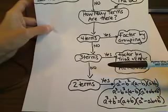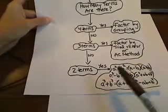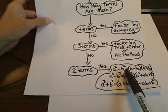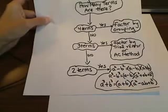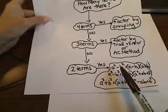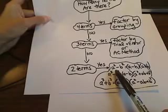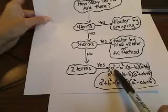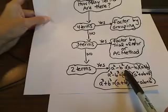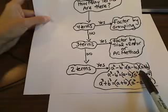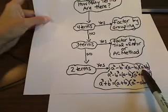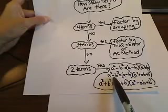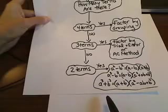And then if it's not three terms, then you go down and you ask yourself: are there two terms? If there's two terms, then you're going to be using a factoring formula. These formulas are—this first one here is a squared minus b squared. That's called the difference of squares. So a squared minus b squared factors into a minus b times a plus b. This one's a little bit hard to see, but that's a plus b. Okay.